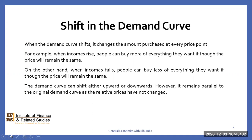When the demand curve shifts, it changes the amount purchased at every price point. For instance, when the income of the consumer rises, people buy more of everything they want, even though the price remains the same. On the other hand, when income falls, people can buy less of everything they want, though the price remains constant.